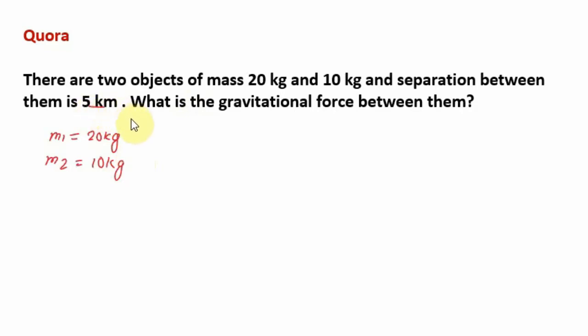We have the separation between both bodies which is 5 kilometers, so r = 5 km. The standard unit of distance or length is meter, so we have to convert this into meters: 5 × 10³ meters, as we know 1 kilometer equals 10³ meters.